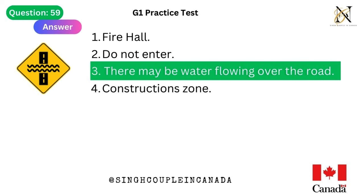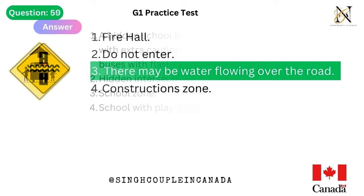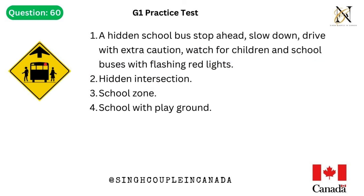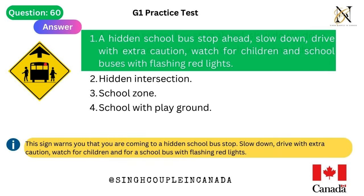Question 60. This traffic sign means: 1. A hidden school bus stop ahead — slow down, drive with extra caution, watch for children and school buses with flashing red lights. 2. Hidden intersection. 3. School zone. 4. School with playground. Answer is 1. A hidden school bus stop ahead — slow down, drive with extra caution, watch for children and school buses with flashing red lights.